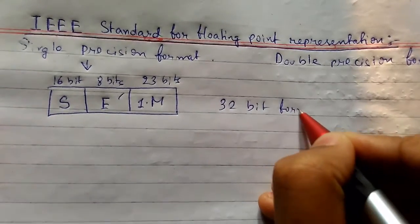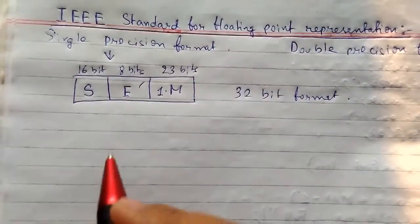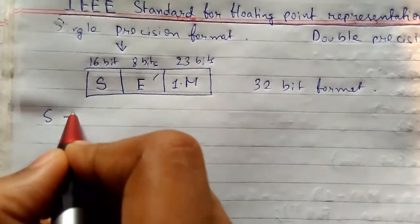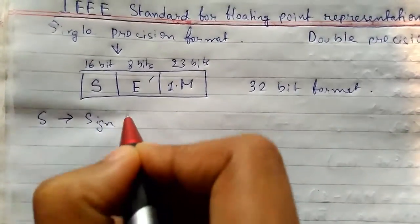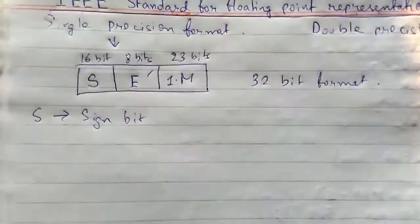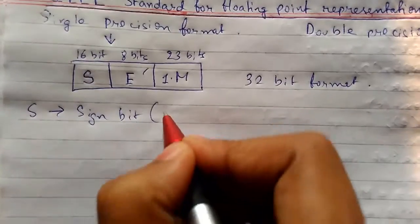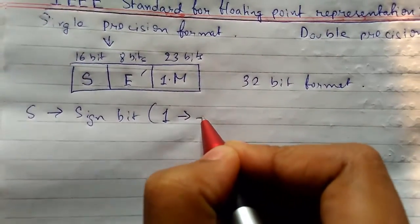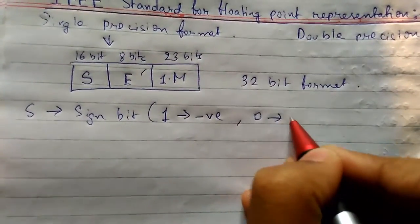Let me tell what S is. S is the sign bit. S value is 1 for negative and 0 for positive.